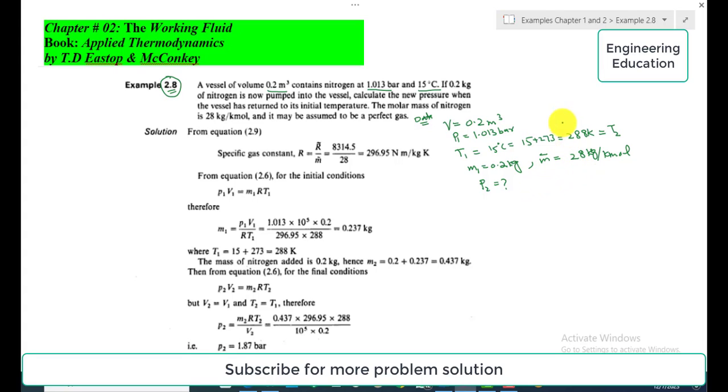It may be assumed to be a perfect gas. With the assumption that this is a perfect gas, we will use the characteristic equation of state to solve the problem and find the unknown parameters. In this case, we are only interested to find the value of P₂.